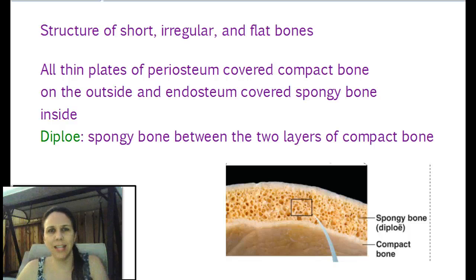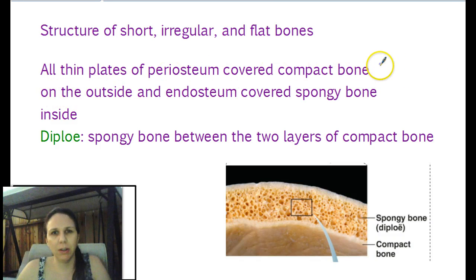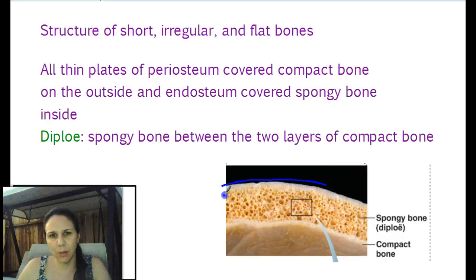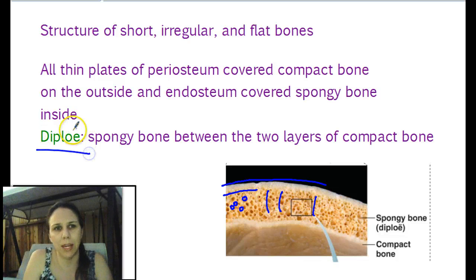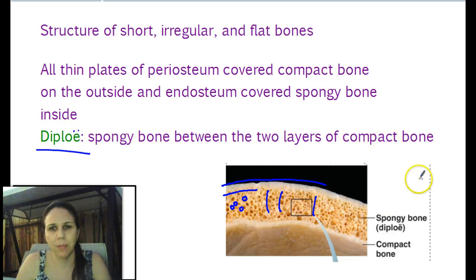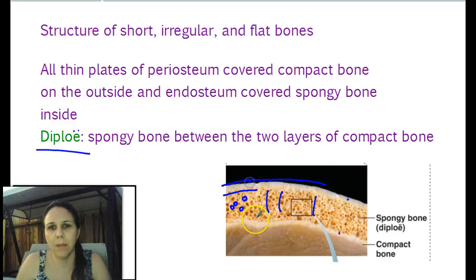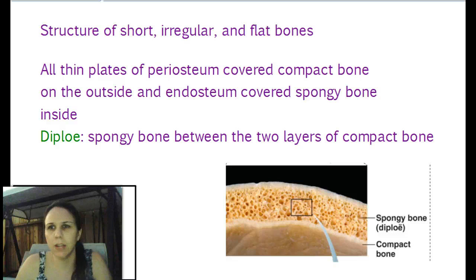Short flat bones have the same idea, just more simplified because there's no hollow cavity inside. So all thin plates of periosteum cover compact bone on the outside, with endosteum on the inside. What's different is that we call the spongy bone on the inside of flat bones diploe. It's like a compact bone sandwich — spongy bone being the meat on the inside, compact bone being the bread on the outside. So no hollow cavities, no medullary cavities, no marrow.